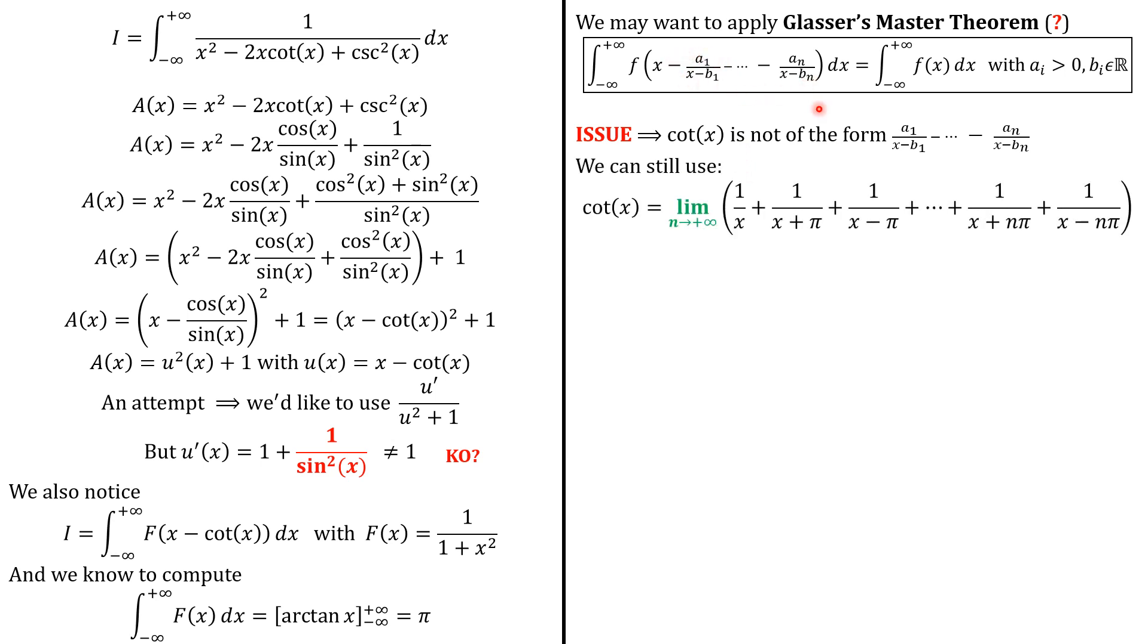Cotangent of x is the limit of this expression. We see that this expression has this form. So we can apply Glasser's theorem with this form. We know that this integral is going to be this one. Because aᵢ is always 1 here, which is positive, we can apply Glasser's theorem.